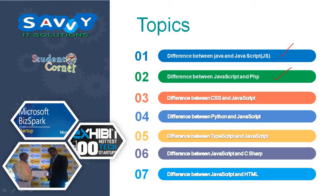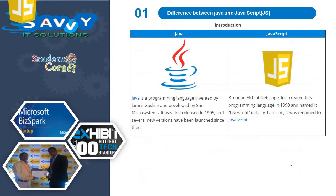The second topic is the difference between JavaScript and PHP, difference between CSS and JavaScript, difference between Python and JavaScript, difference between TypeScript and JavaScript, difference between JavaScript and C Sharp, and difference between JavaScript and HTML. We need to learn these seven things in this video.